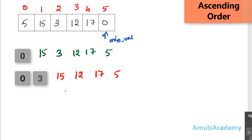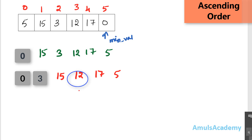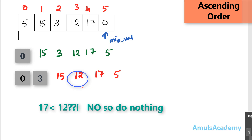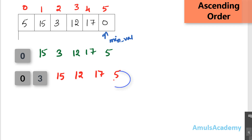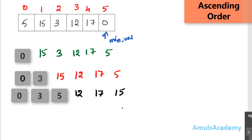Now 0 and 3 are the sorted part, and 15, 12, 17, 5 are the unsorted part. I find the minimum value in the unsorted part — take 15 as minimum, compare with 12: 12 is smaller so minimum becomes 12. Compare with 17 — no. Compare with 5 — 5 is smaller, so we found the third smallest value. I swap 15 and 5. After that the values are: 0, 3, 5, 12, 17, 15. Now 0, 3, 5 are the sorted part, and 12, 17, 15 are the unsorted part.